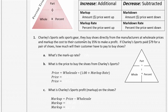Charlie Sports sells sports gear. They buy shoes directly from the manufacturers at wholesale prices and mark up the cost to their customers by 35% to make a profit. If Charlie Sports paid $79 for a pair of shoes, how much will their customers have to pay? Any business is typically buying their product from the manufacturer — the wholesale price. Those businesses wouldn't make money if they sold it to customers at that same price, which is why they mark it up.